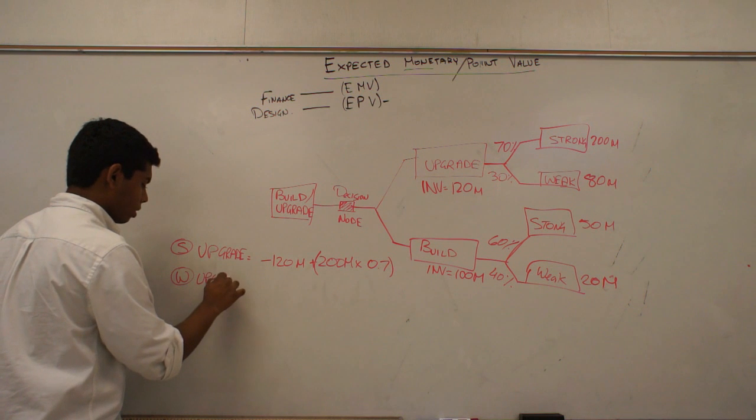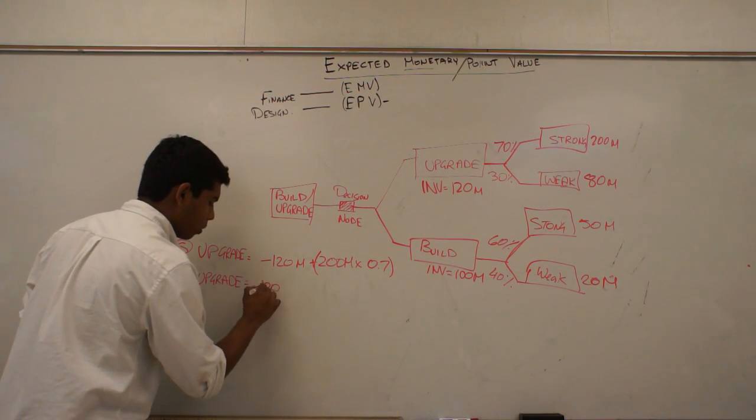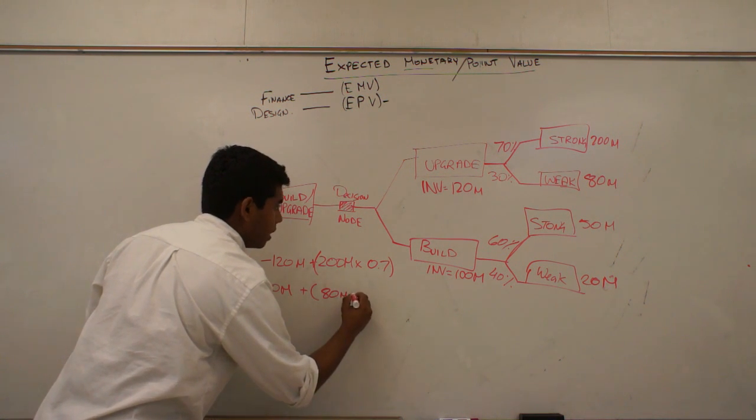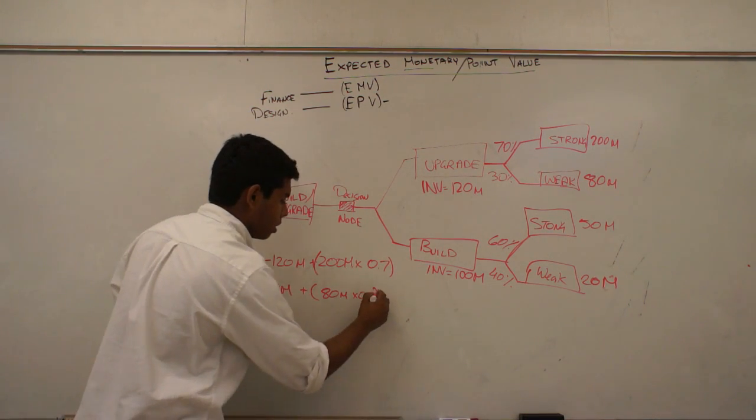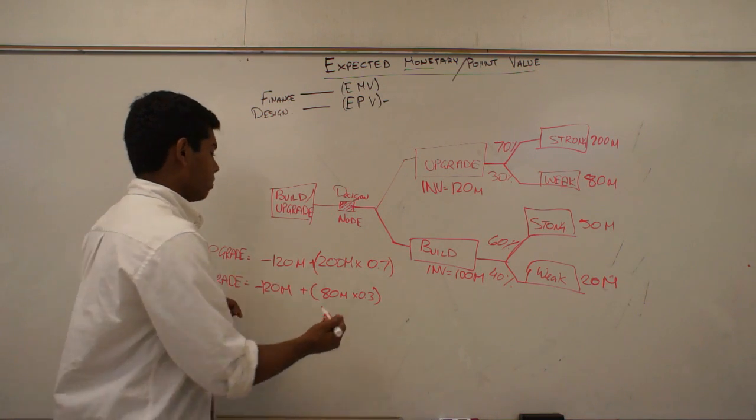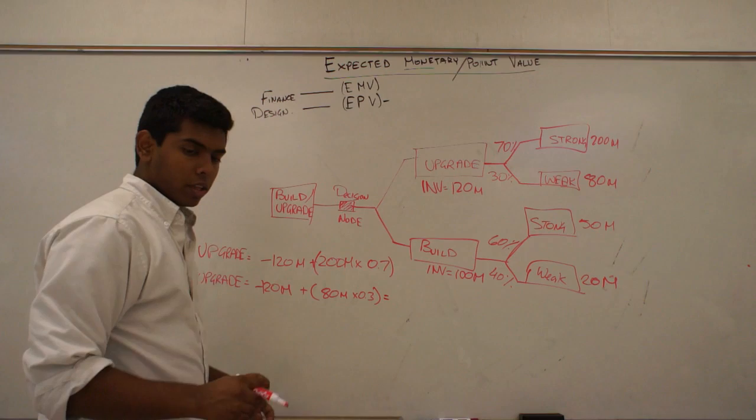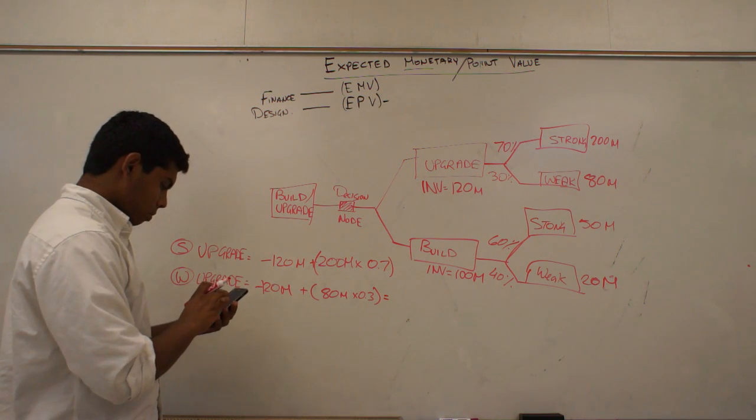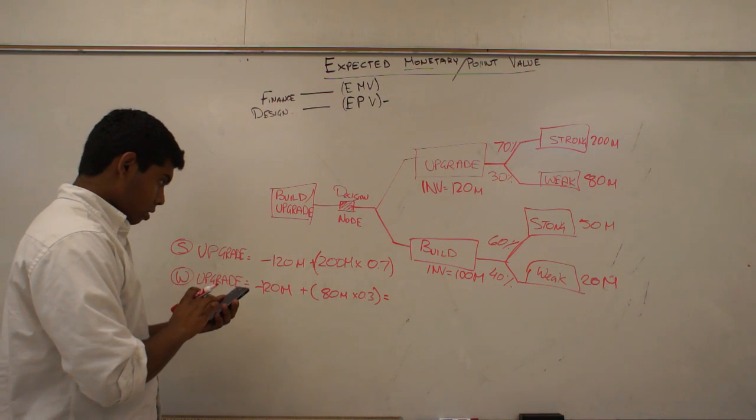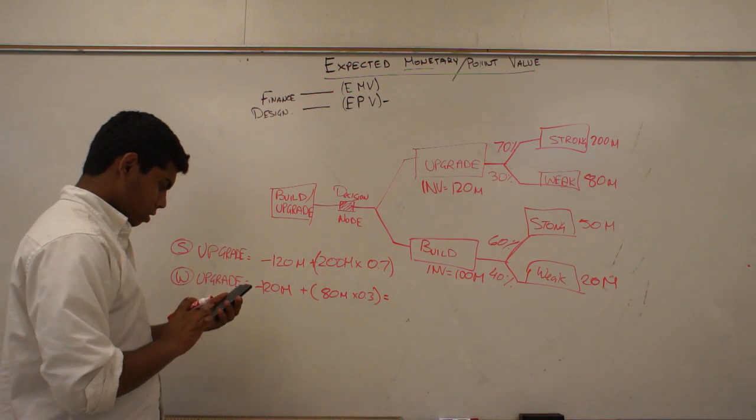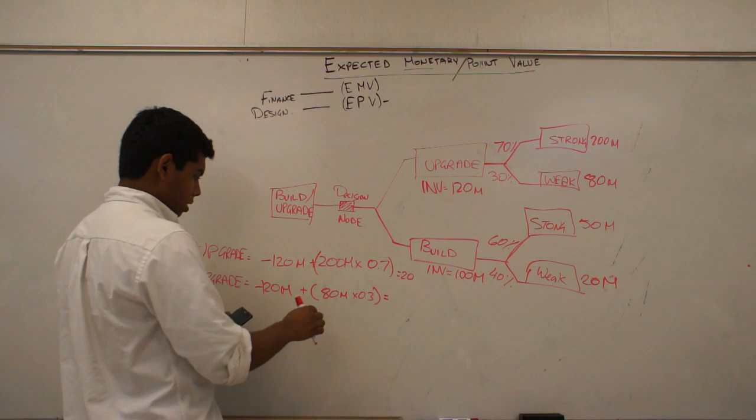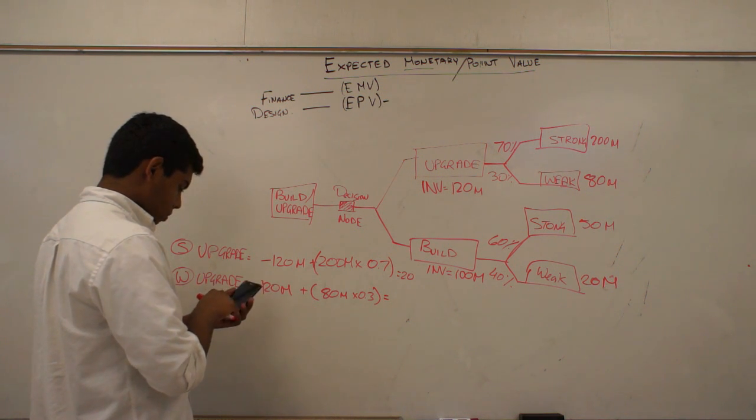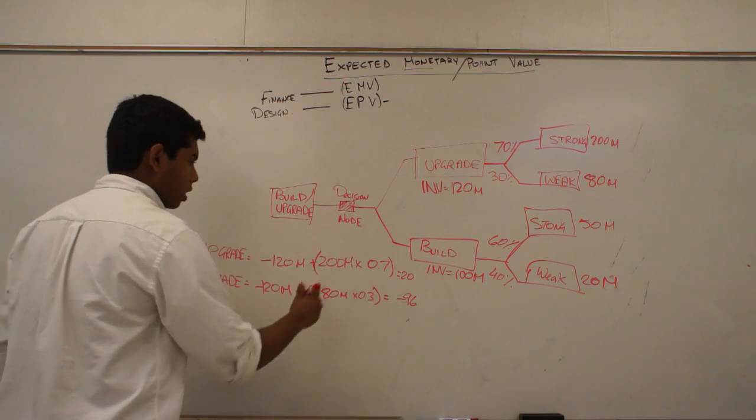And then we have weak market. And if we upgrade, we have minus $120 million plus we have $80 million as our return on investment. And that is multiplied by 0.3 because we have a 30% chance of having a weak market or a 30% chance where the market would treat us weakly. So at the end of the day, if I calculate this properly, I get minus $120 plus $140, which equals $20. And then this equals minus $96.